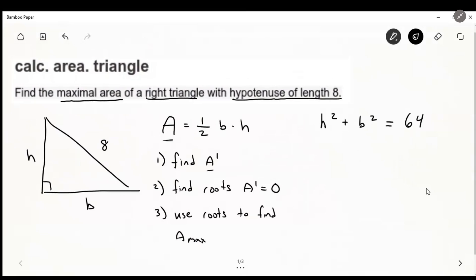And since we want to find a prime, let's start thinking about a in terms of one variable. So we know that a equals one-half bh. Let's try to only use b or h here. And we have kind of a system of equations where we can use this one here to solve for either h or b, and then we'll be able to use just one variable in our area equation. So let's do that. We'll solve for b, b squared equals 64 minus h squared, or radical 64 minus h squared is what b equals.